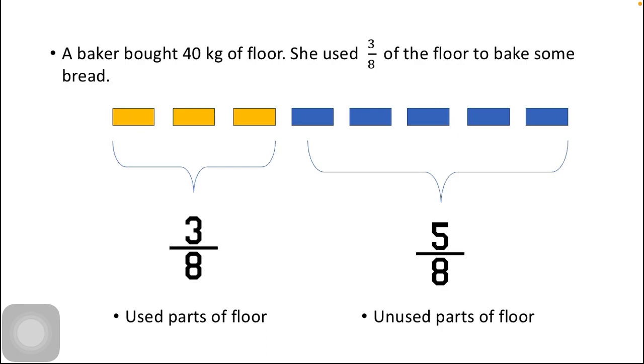The used parts of flour equals 3/8, which is given in the question. The numerator is 3, which is represented through three yellow bricks, and the denominator is 8, that is the whole units.